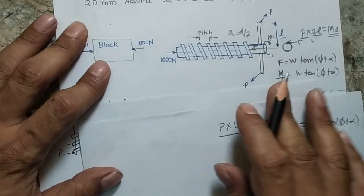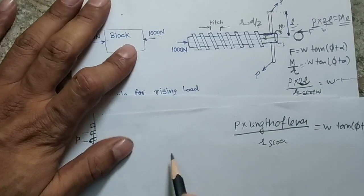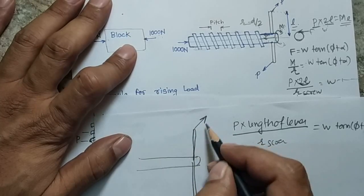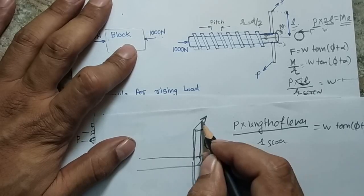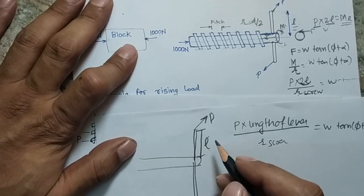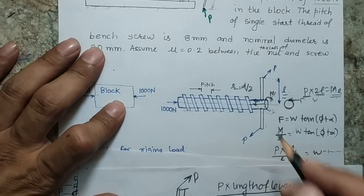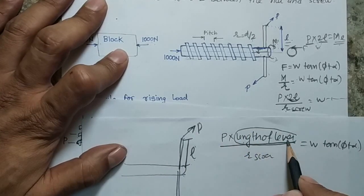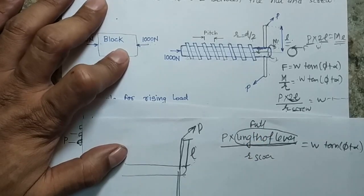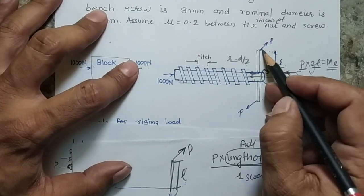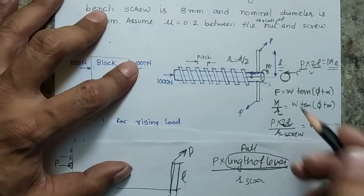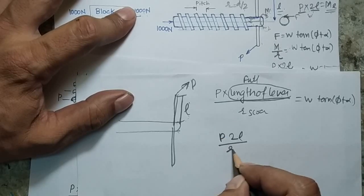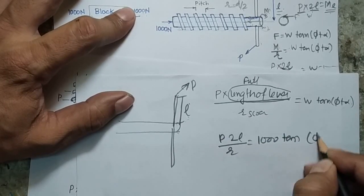An important note: in some cases instead of a couple, a single force P is applied at one end of the lever. In that case you would use P × L, not P × 2L, because you are generating a moment from a single force rather than a couple. You must carefully check whether you are applying a couple or a single force, and use the full or half lever length accordingly. In our case, two P forces are applied, generating a couple, so we use the couple value P × 2L in our formula.